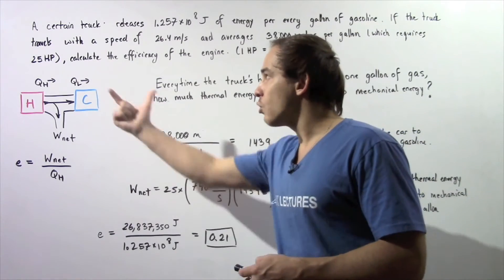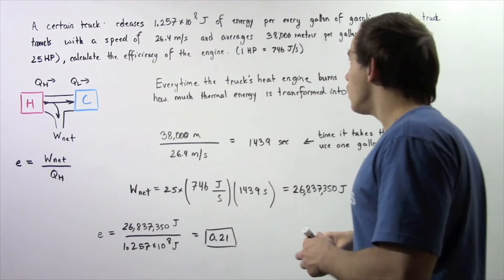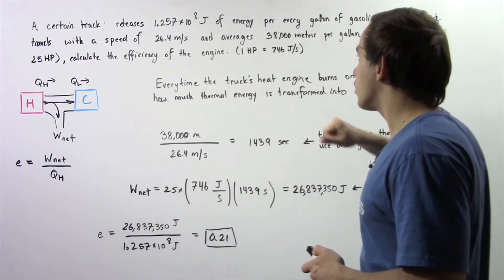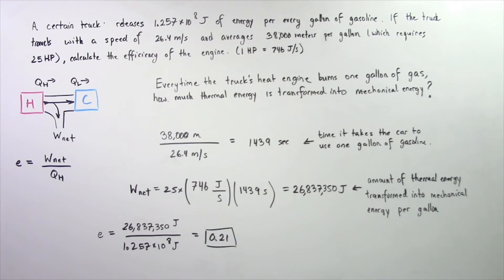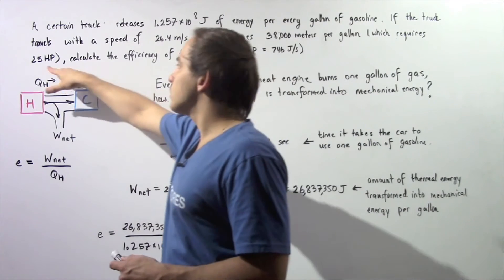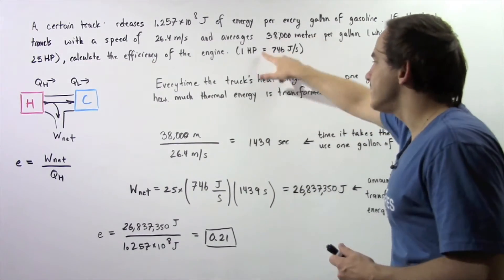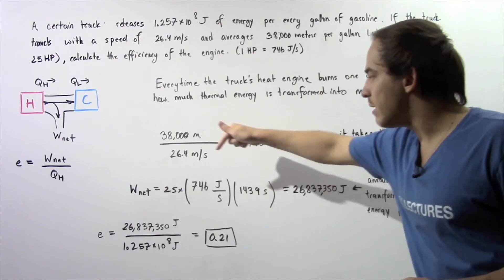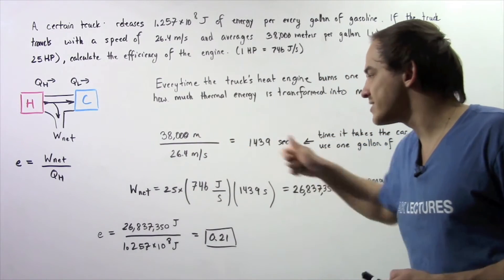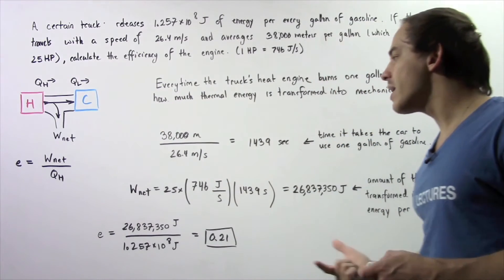Now we must convert our horsepower into joules per second. We know that 1 horsepower is equal to 746 joules per second. So because our car requires 25 HP, we take this quantity and multiply it by 25. So 25 multiplied by 746 joules per second gives us the power that our car requires.